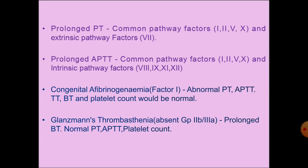Congenital afibrinogenemia is a deficiency of factor 1, which is involved in the common pathway. Hence, both PT and APTT are prolonged. Thrombin time, bleeding time, and platelet count would be normal.